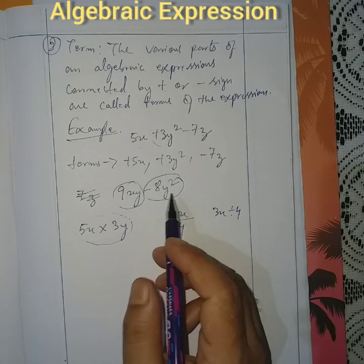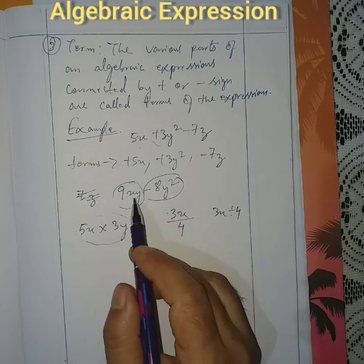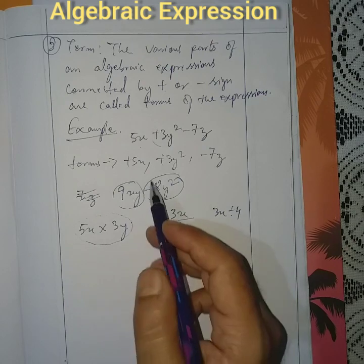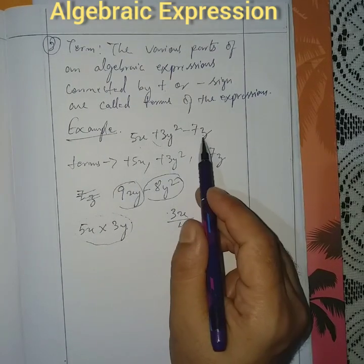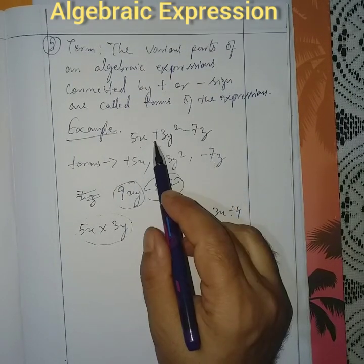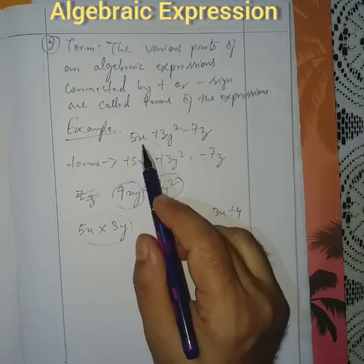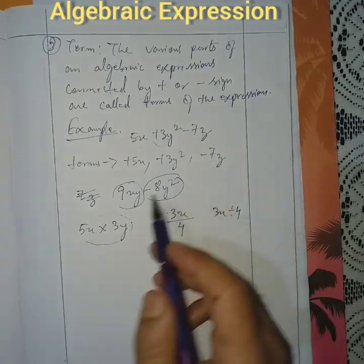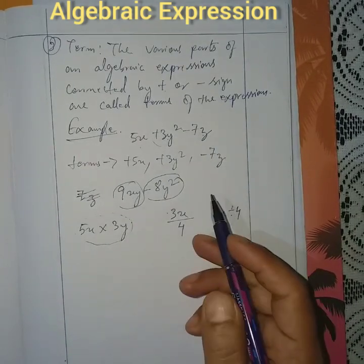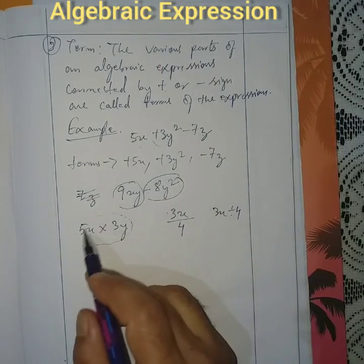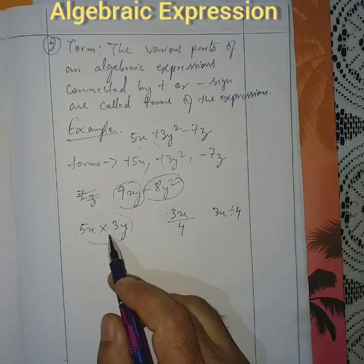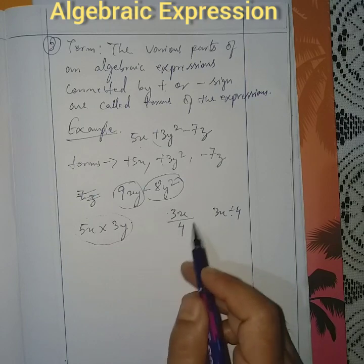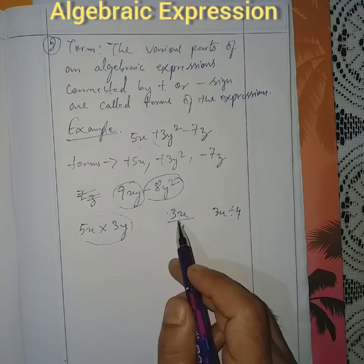So, plus or minus signs decide how many terms are there in the algebraic expression. In 5x plus 3y² minus 7z there are 3 terms; in 9xy minus 8y² there are 2 terms; and 5x into 3y and 3x by 4 are each only one term.